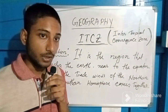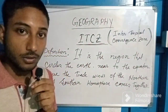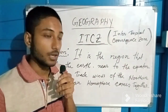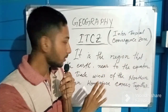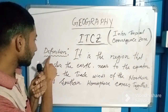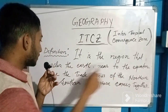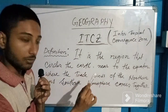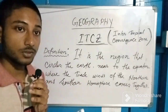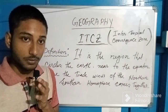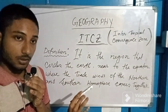Hello guys, today I am going to explain a topic from physical geography called ITCZ. First of all, you have to understand the full form of ITCZ. As you can see written on the board, its full form is Intertropical Convergence Zone. The definition: it is the region that circles the earth nearer to the equator where the trade winds of the northern and southern hemisphere come together — basically a place nearer to the equator of the earth.